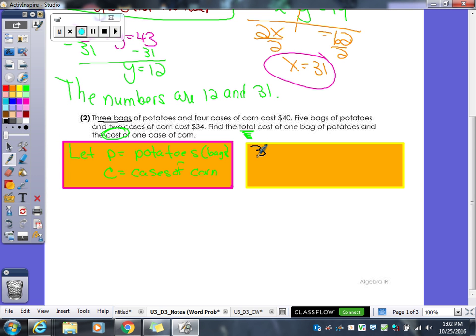We want the cost of them. So our answer is going to be a money answer. So P equals potatoes, C equals corn. Then we're going to do our equations next to it. Three bags of potatoes, so three P plus four cases of corn cost forty dollars. The next one. Five bags of potatoes and two cases of corn cost thirty four dollars. We want to find the cost of one bag of potatoes and one case of corn. So if you wanted to get rid of the P's, you could multiply the top by five and the bottom by negative three. But I can change this two to match that four. How do I change it? What do I multiply it by? Negative two. If I multiply all that by negative two, it will change that positive 2C to a negative 2C.